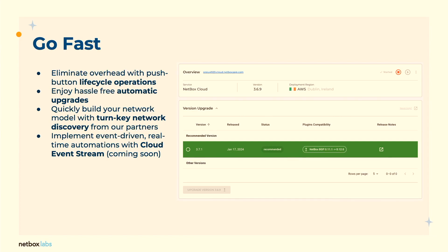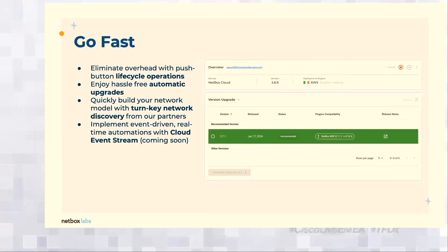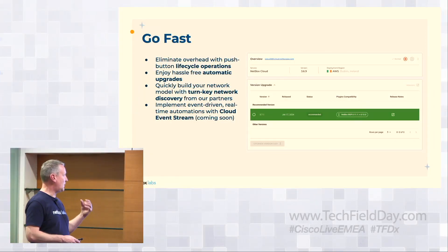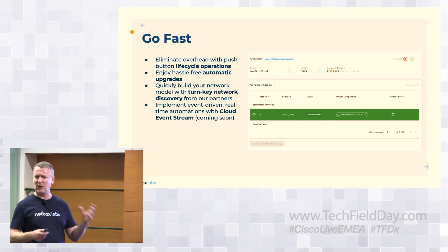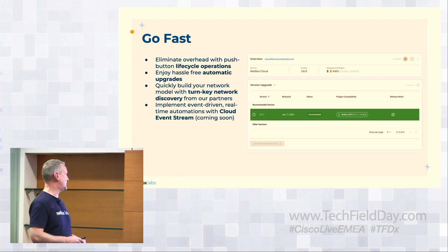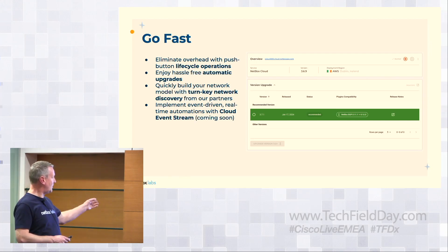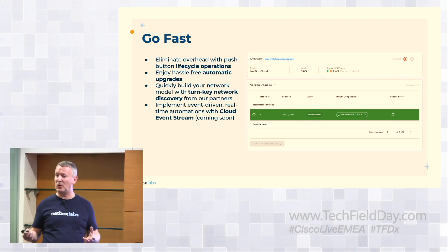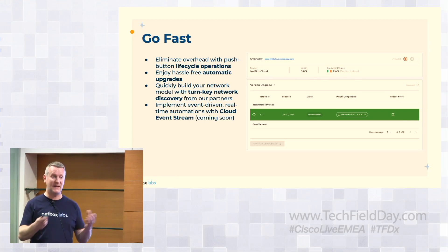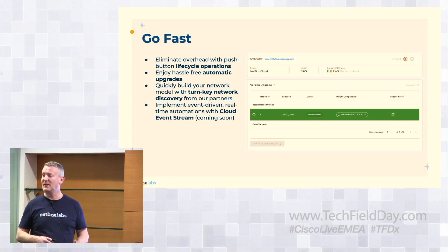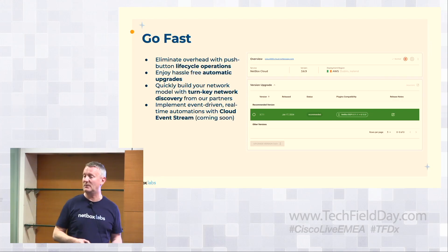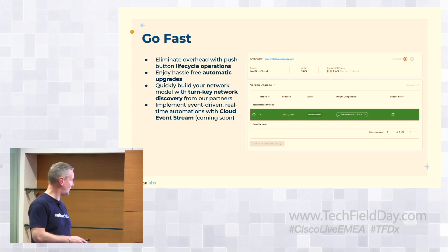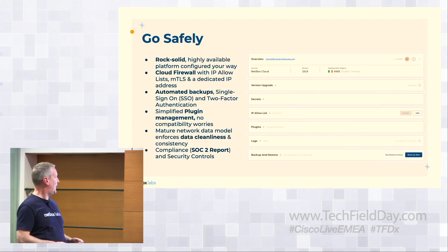Netbox Cloud allows you to go faster with push-button lifecycle operations. The upgrade process is super simple — you get a recommended upgrade path and plugin compatibility is taken care of for you. Coming soon, we're launching a cloud event stream, which is like a message bus. Another tool subscribing to it can take actions based on what it receives — for example, you add a VLAN in Netbox, it drops onto the message bus, and a listening tool deploys that VLAN to the network. Watch out for that, it's coming very soon.